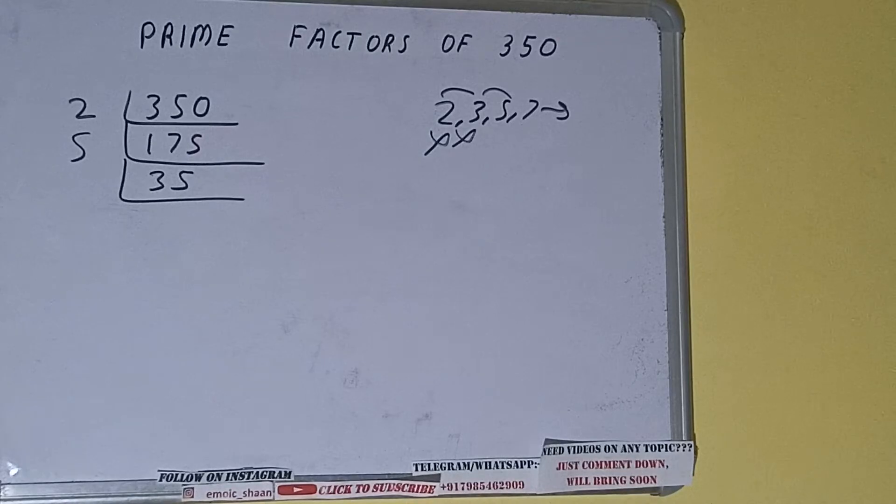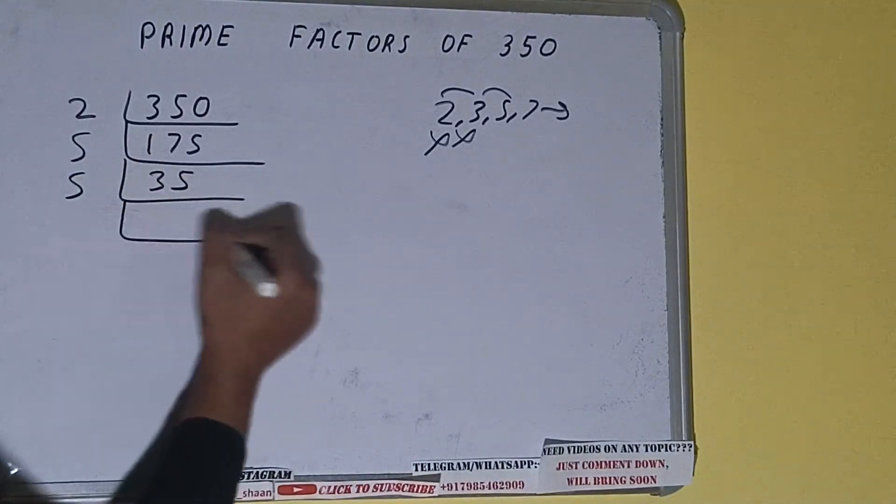Is 35 further divisible by 5? Yes it is because the last digit is 5. So divide it and we'll be having 7.